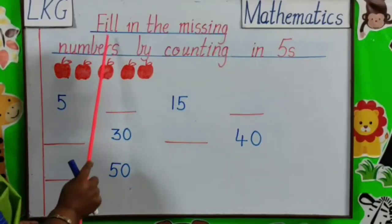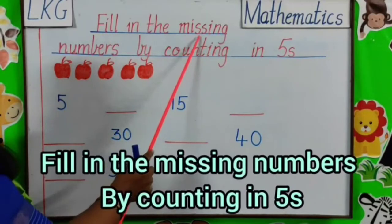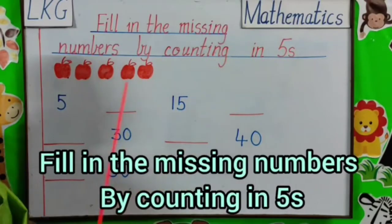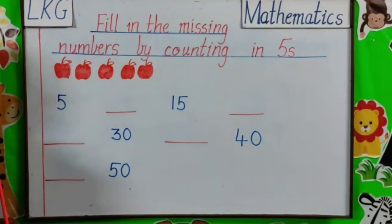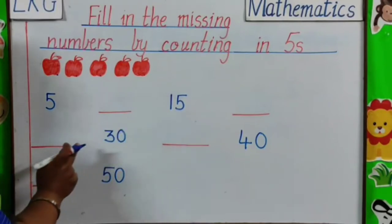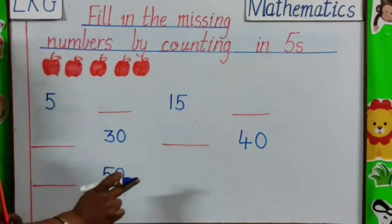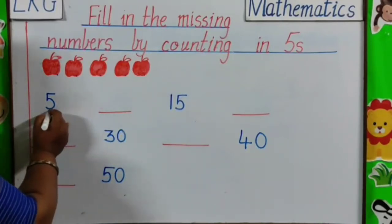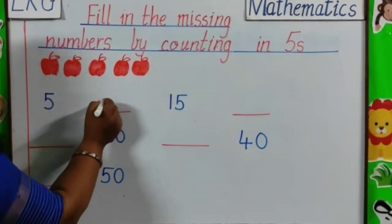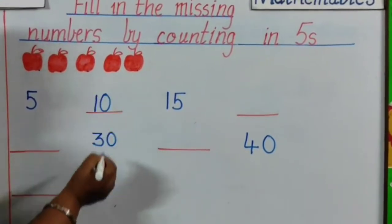Next topic is, fill in the missing numbers by counting in fives. Children, we have already learned count in fives. We have to complete the missing numbers here. So, first number is 5. After 5, 6, 7, 8, 9, 10. Answer is 10.